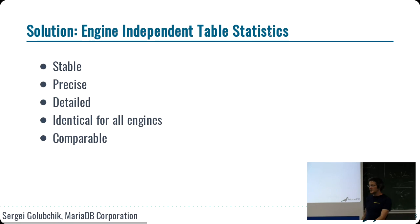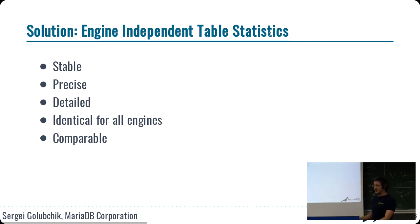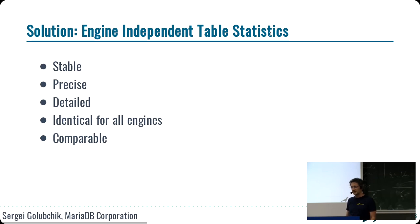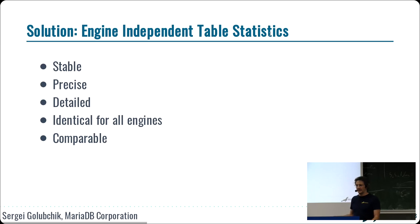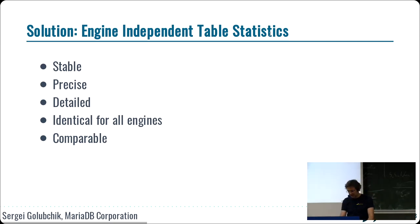The solution to all these problems is what in MariaDB is called engine-independent table statistics. This is statistics calculated by the server, not by asking an engine — so it's engine-independent. It's stored, so it's persistent. It's not recalculated every time, so it's stable. It's precise. It's identical for all engines. It's detailed, because it calculates more data than a storage engine can tell from the index. And it's comparable because it's calculated in an engine-independent way — all storage engines cannot lie, and the numbers are always calculated identically.